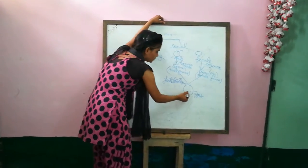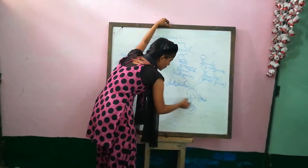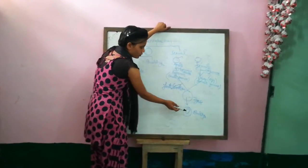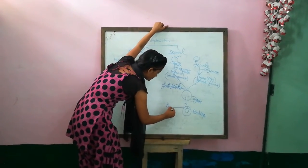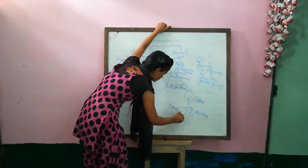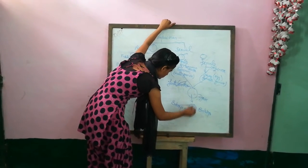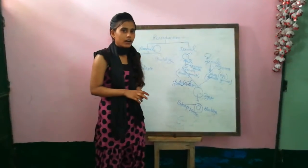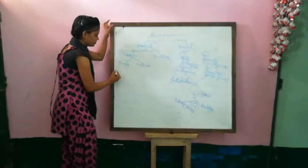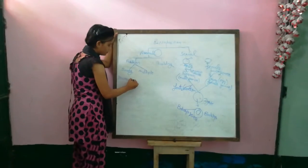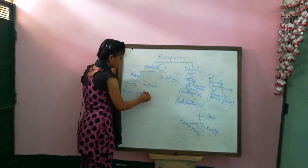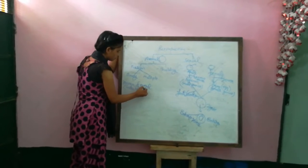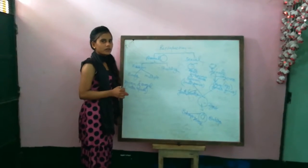The zygote develops into an embryo, and this process is known as embryogenesis. That is all about sexual reproduction. Now, what is the Terror of Bengal? The Terror of Bengal is water hyacinth, which is the most common weed found in aquatic areas.